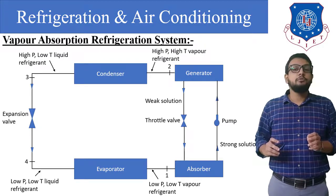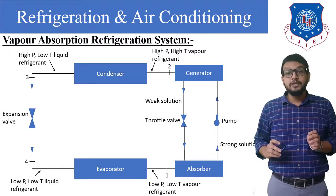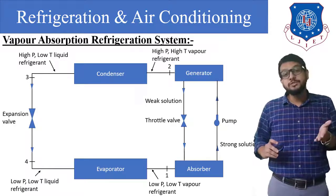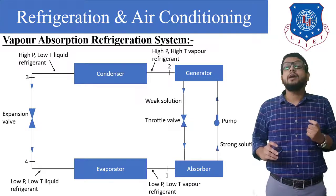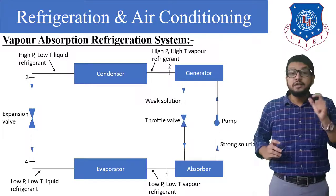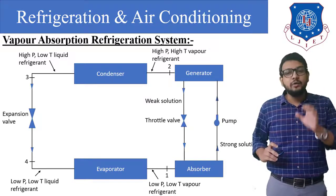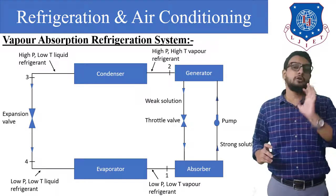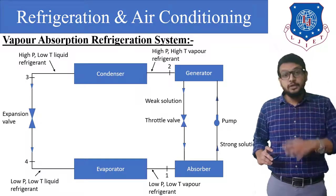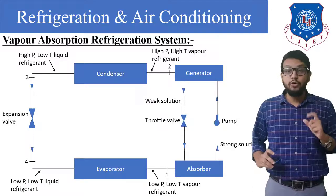As the name itself suggests, vapor absorption means vapor will be absorbed. The refrigerant used is ammonia (NH3). Ammonia has a very important characteristic: it can easily dissolve in low temperature, low pressure water — that is, ammonia has high solubility in cold water. As temperature increases, the solubility of ammonia is reduced. Because of this property, ammonia vapor is absorbed.